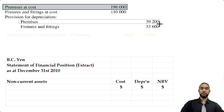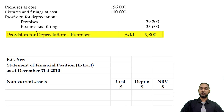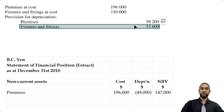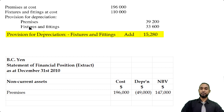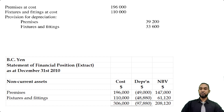The existing depreciation for premises is $39,200, but from the previous part of the question we had to increase it by $9,800. Adding those together gives us $49,000. You take cost minus depreciation to get net book value. For fixtures and fittings, cost was $110,000 and the previously existing provision for depreciation was $33,600. Adding the current year's depreciation of $15,280 to $33,600 gives $48,880. Subtracting that from the cost of $110,000 gives a net book value of $61,120. Adding up everything gives us the non-current asset totals.